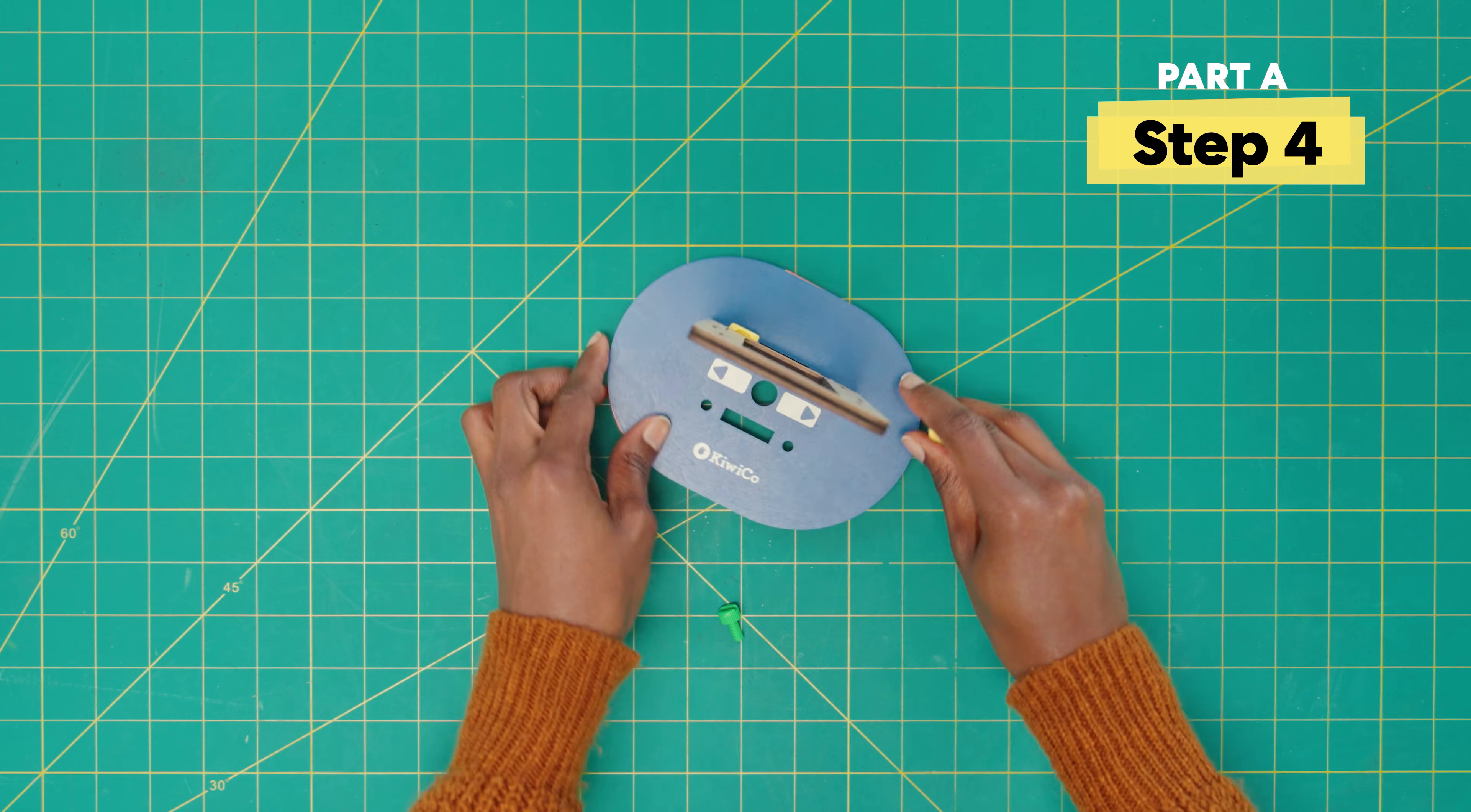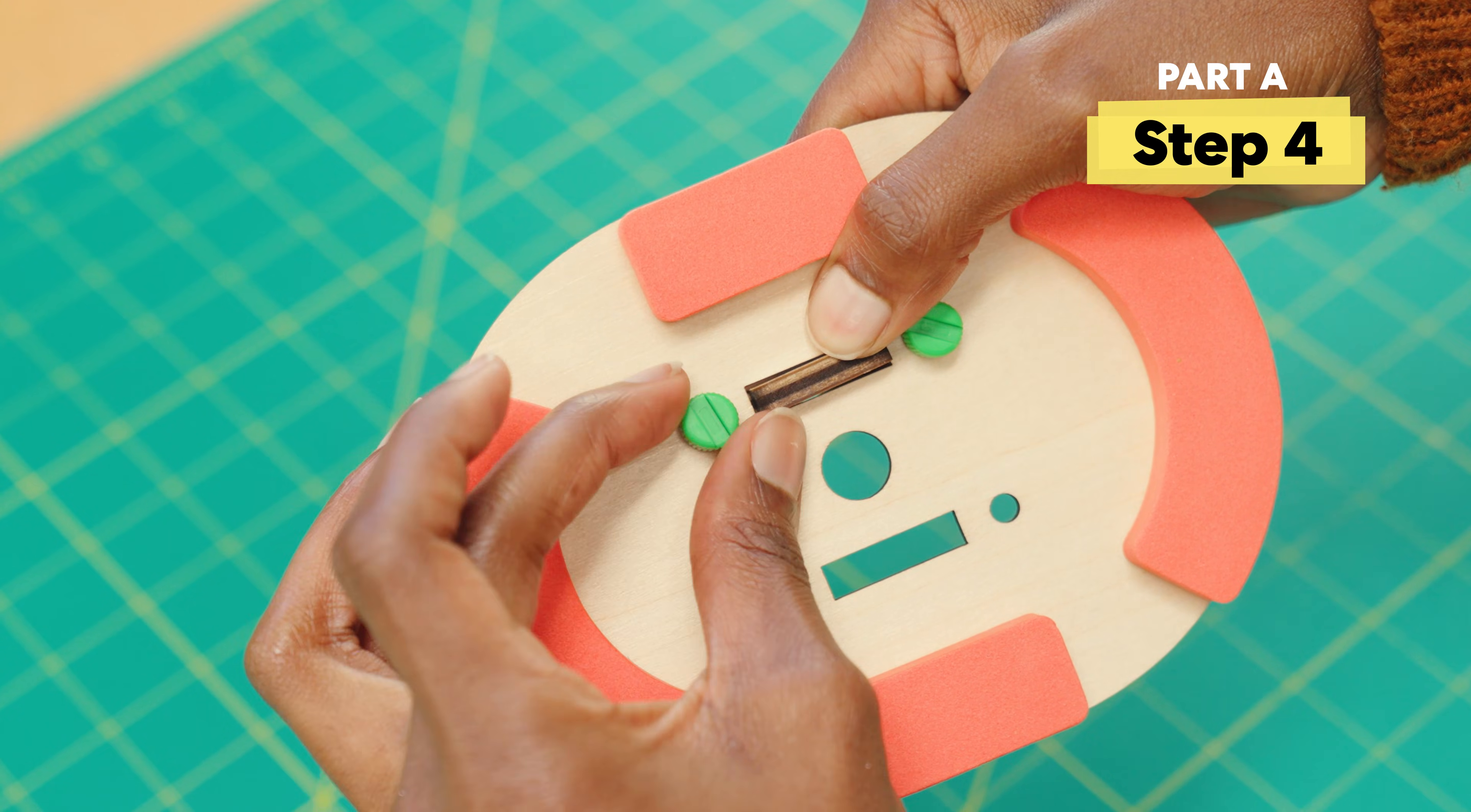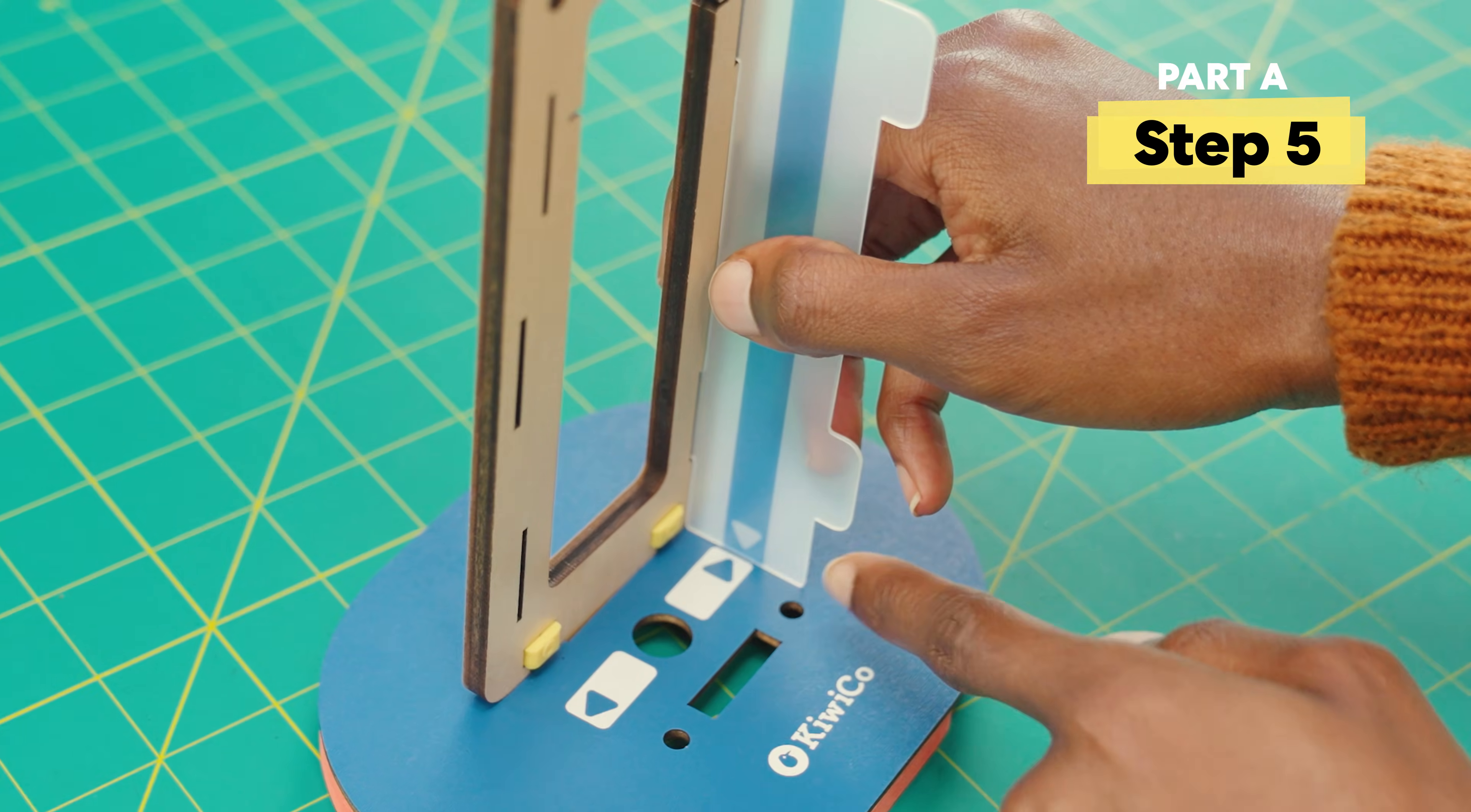Now, repeat on the other side. Okay, push in the tab strip. Make sure the arrow is pointing down and the arrow should line up here.